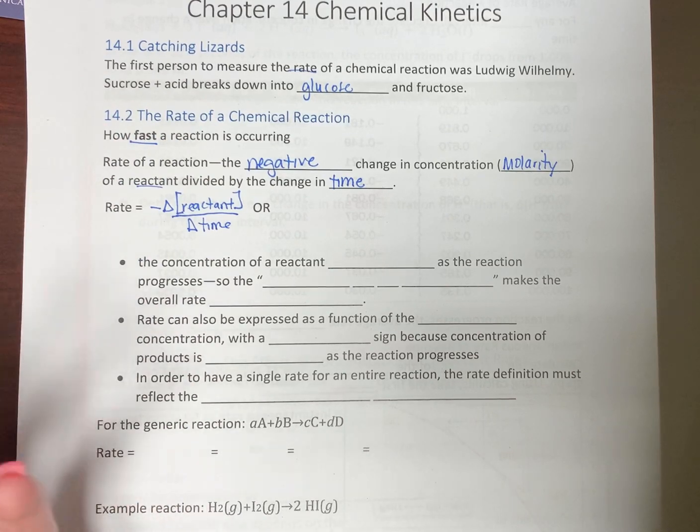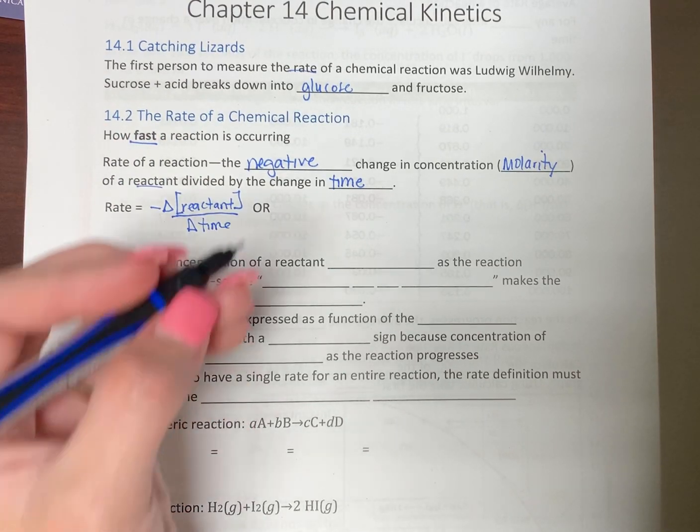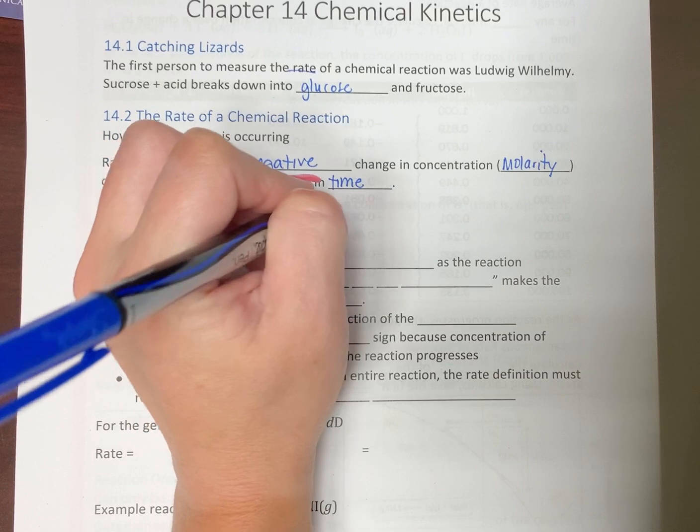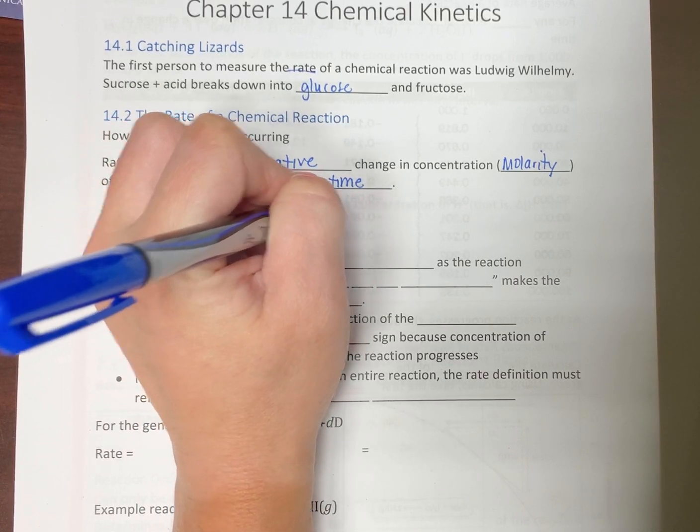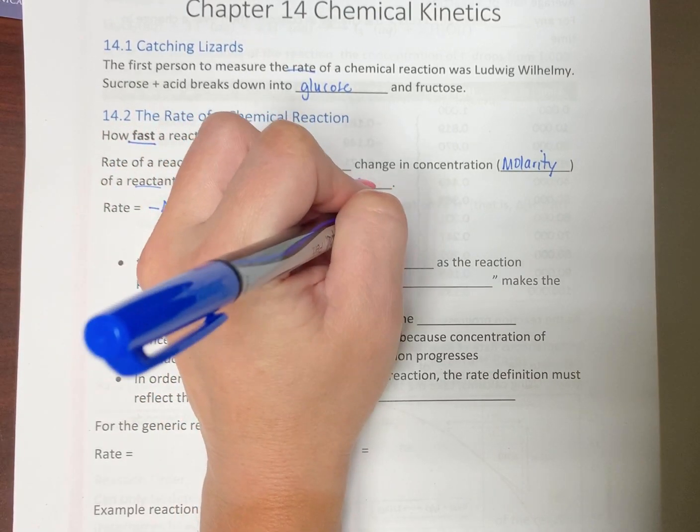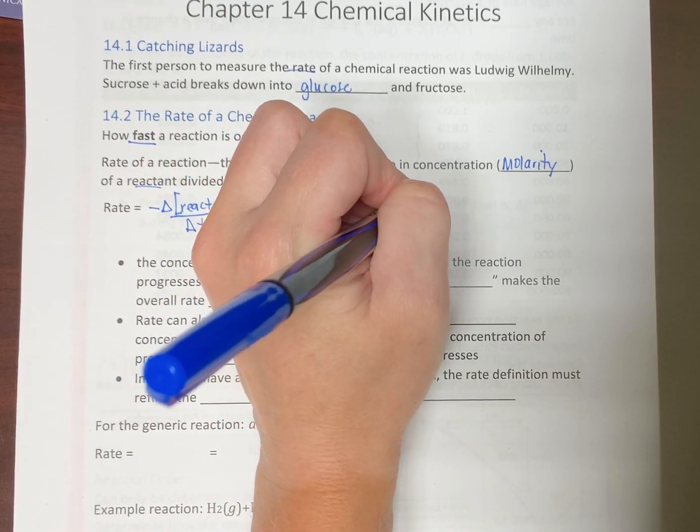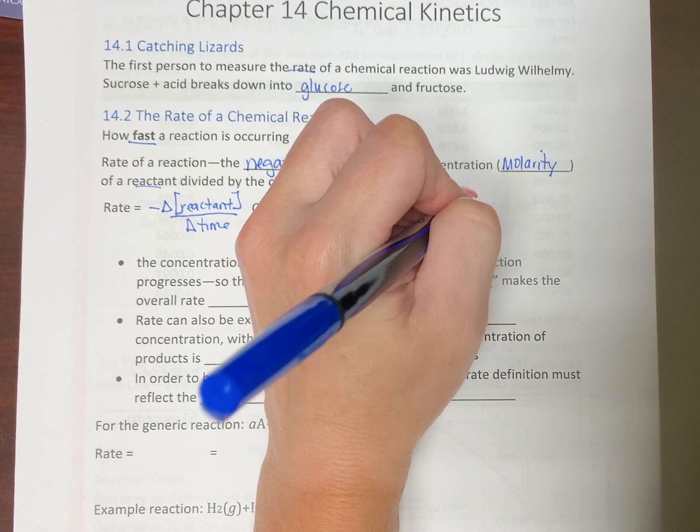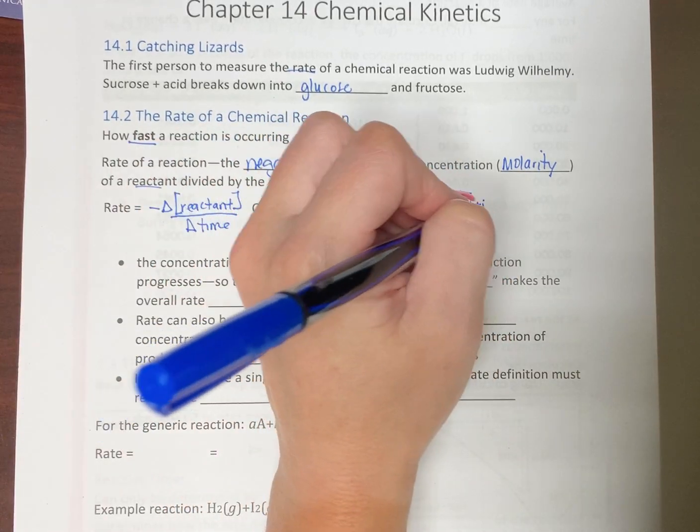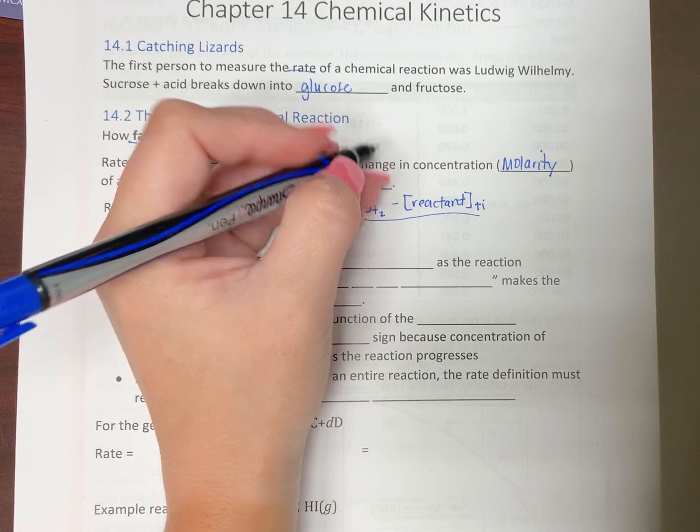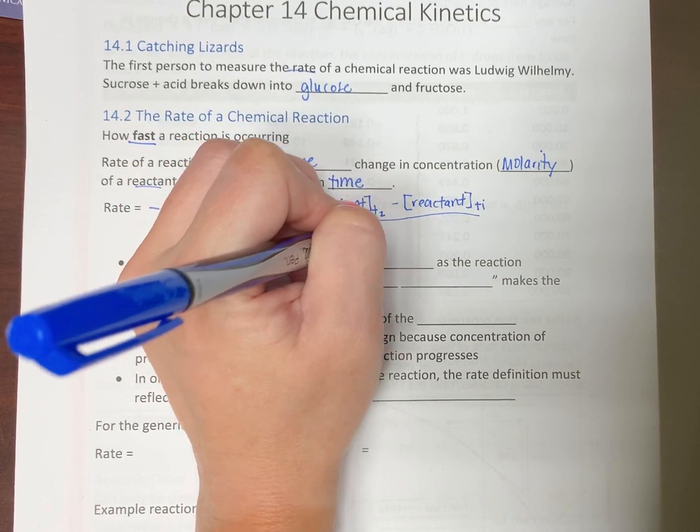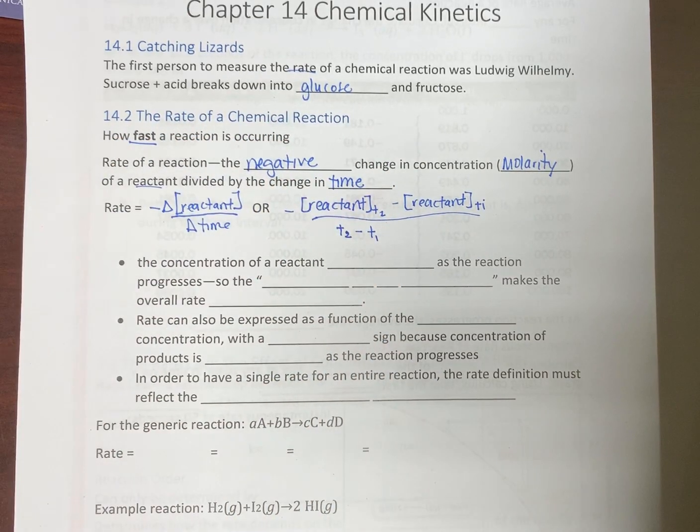Or, again, algebra based. Most of you have probably already had calculus. So negative of reactant, concentration of the reactant at time 2 minus concentration of your reactant at time 1 divided by time 2 minus time 1. Again, we'll be dealing with graphs and things. You can tell that this is a slope formula.